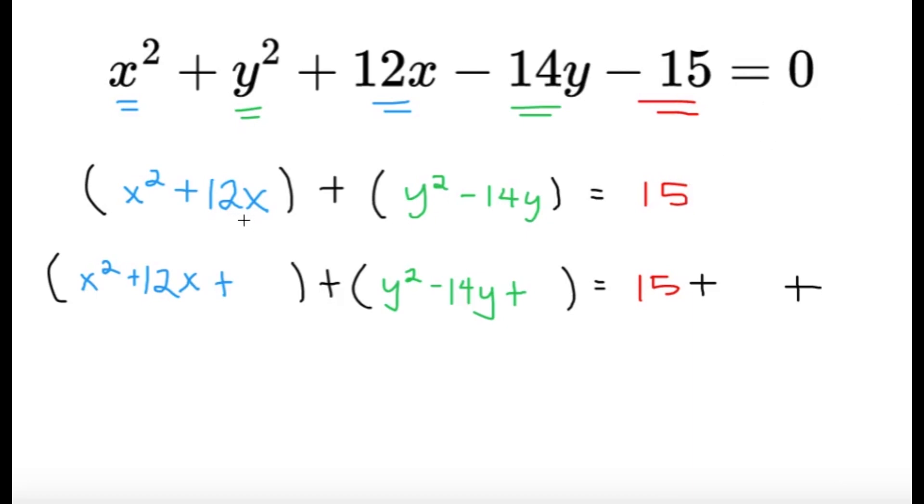Now to complete this square, what do we have to put in these two? So it's very simple, we take the coefficient of x that's 12, we divide it by 2 and then we square it. Dividing it by 2 we're going to get 6, squaring it we're going to get 36.